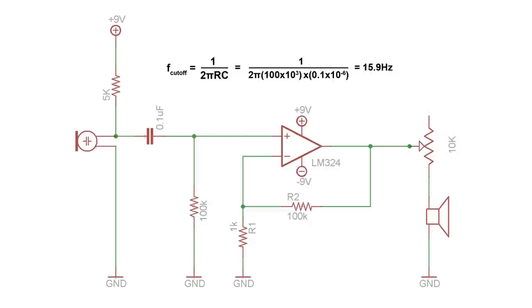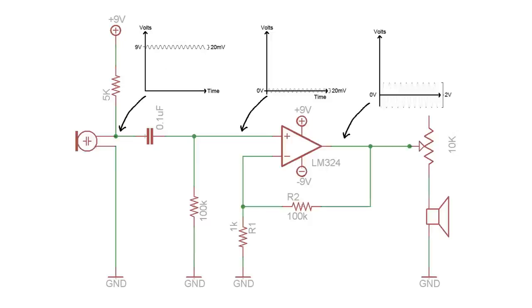Using the cut-off frequency equation, you can see that the cut-off frequency is 15.9 Hz, so any frequencies above that get to pass through into the amplifier stage. The result is a 2-volt AC signal on the output of the amplifier, suitable for driving headphones.